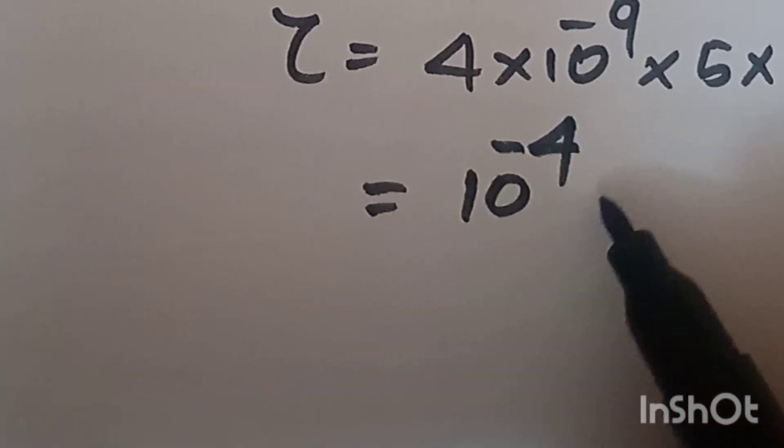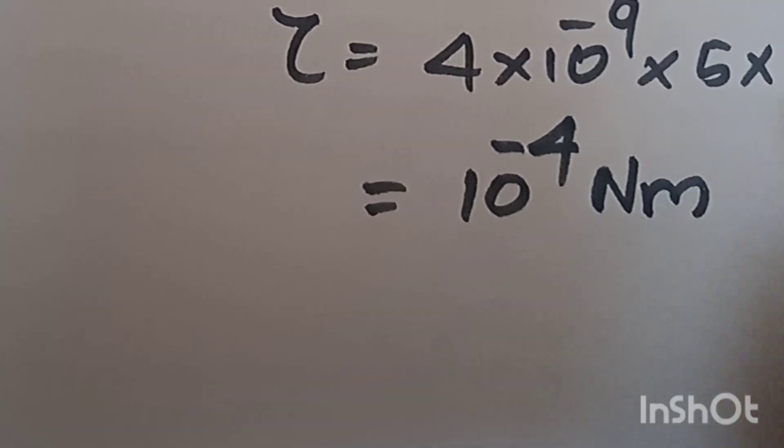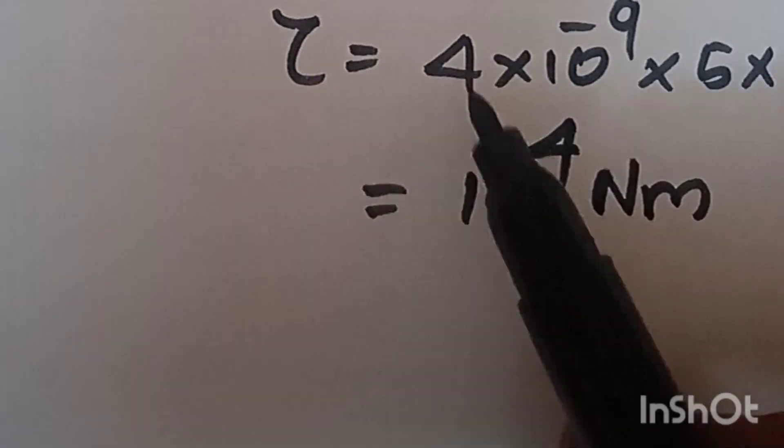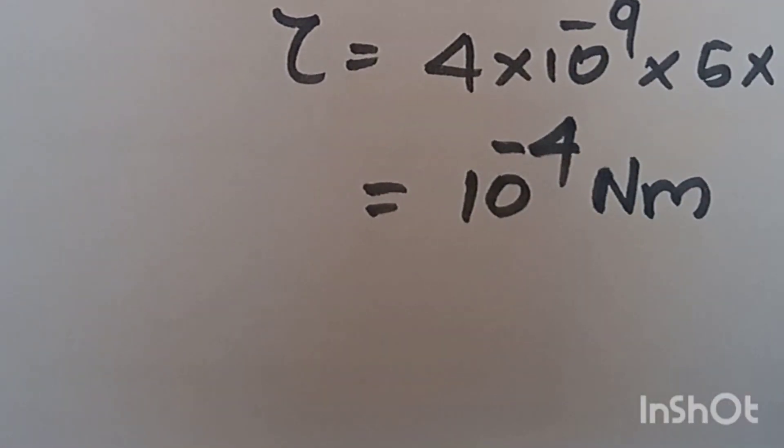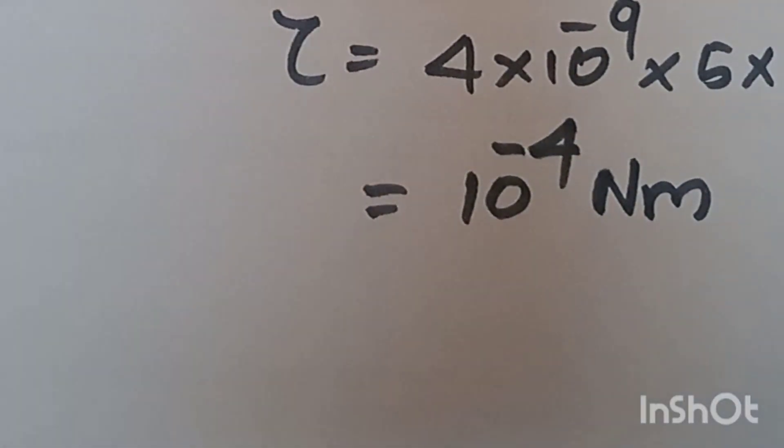τ equals F cross D. F is newton, D is meter, therefore newton meter. So 10^-4 newton meter is the torque on the dipole in the electric field.